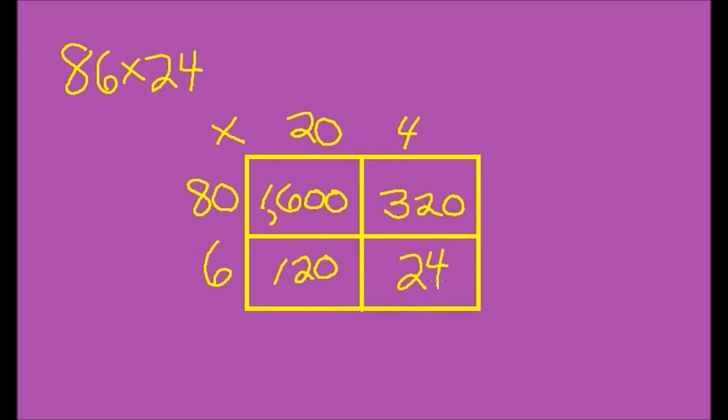Alright, so now we have four partial products. The final step in this box method process is to add the partial products. Make sure when you write your partial products you write them neatly and line them up. I see a lot of kids get problems wrong because they cannot read their own writing.